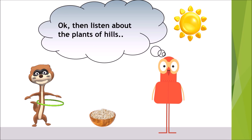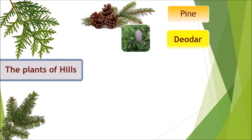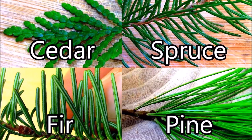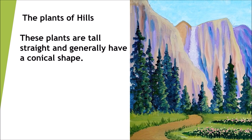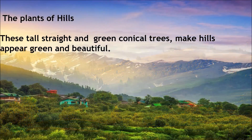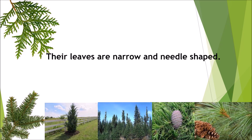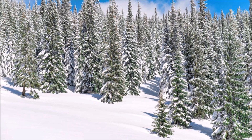Okay, then listen about the plants of hills. Pine, deodar, cedar, spruce and fir are some of the plants which grow on hills. These plants are tall, straight and generally have a conical shape. These tall, straight and green conical trees make hills appear green and beautiful. Their leaves are narrow and needle shaped.